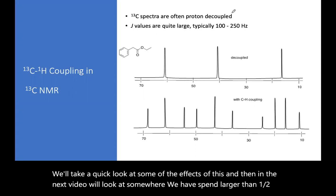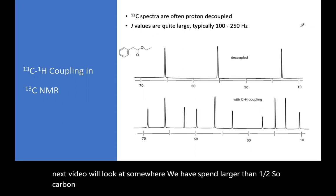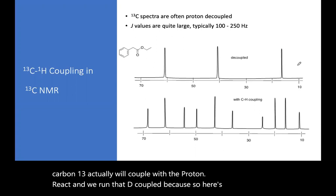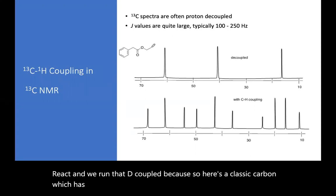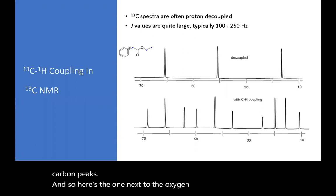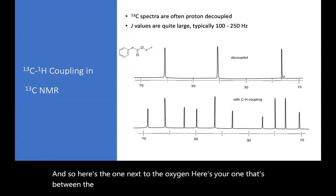So carbon-13 actually will couple with the proton, and we run that decoupled. So here's a classic carbon which has been decoupled. So if we look at the sp3 region, we have three carbon peaks. And so here's the one next to the oxygen, here's your one that's between the carbonyl and the aromatic ring, and here's your methyl. That's decoupled, so you get three singlets.